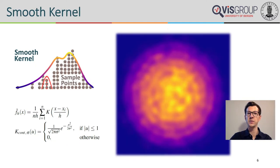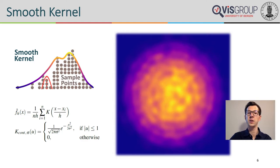In order to capture the continuous phenomenon of the data, we interpret the underlying distribution as a two-dimensional field approximated through a model. We consider the individual sample points as samples of a probability density function, where the density at point x is computed through the addition of kernels at the positions of each data sample. Assuming k is a kernel function, h the corresponding kernel bandwidth, n the number of samples x_i, and sigma defines the width of the Gaussian kernel. By using an on-the-fly kernel density estimation, we can achieve interactive performance allowing the user to adapt individual parameters in real-time.